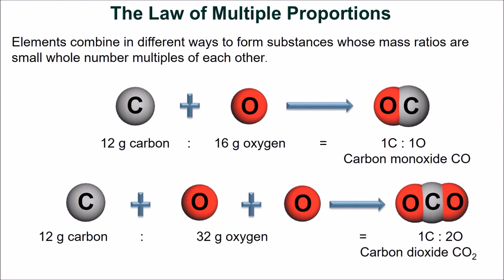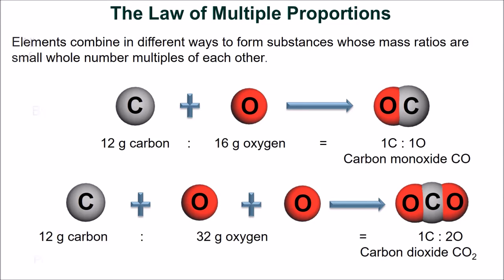For example, the mass of carbon that combines with the mass of oxygen to form carbon monoxide will always have the mass ratio of one carbon to one oxygen. Similarly, the mass of carbon that combines with the mass of oxygen to form carbon dioxide will always have the mass ratio of one carbon to two oxygen.